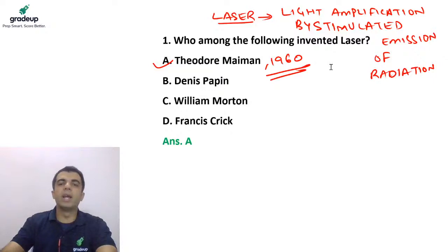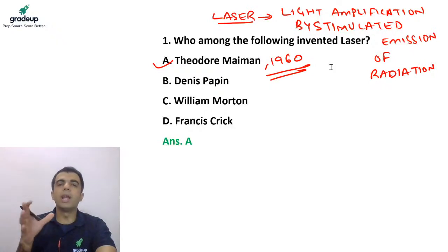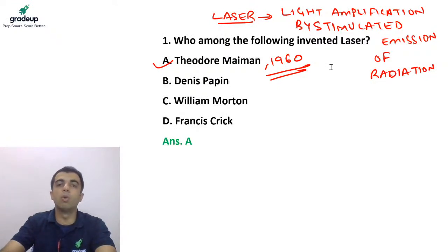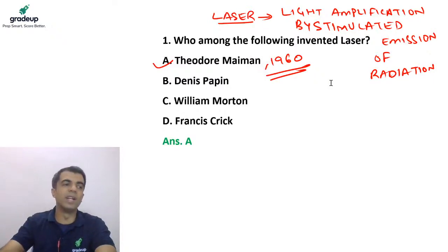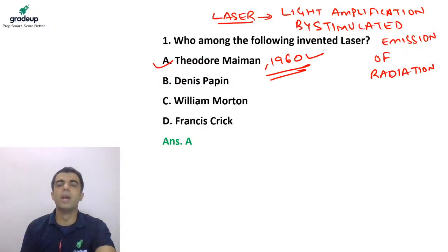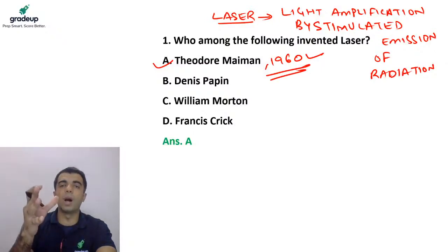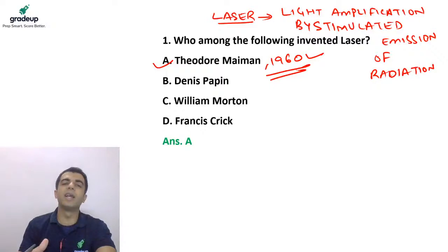The first laser was invented by Theodore Maiman after the hard work and research of Charles Townes and Arthur Leonard. You should also know the years, because in CDS examination you may be asked to arrange experiments in chronological order.